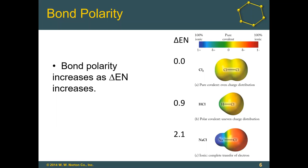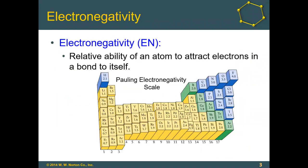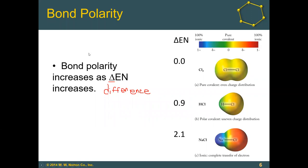We determine bond polarities by looking at the difference in electronegativity — the capital delta here means we're finding the change in electronegativity between atoms. If we take two identical atoms like the two chlorines in Cl₂, they have the same electronegativity. Looking at chlorine on the table, it has a value of 3.0, and 3.0 minus 3.0 gives us zero. That makes sense because it's the same atom, so this molecule falls on the pure covalent, nonpolar part of the spectrum.